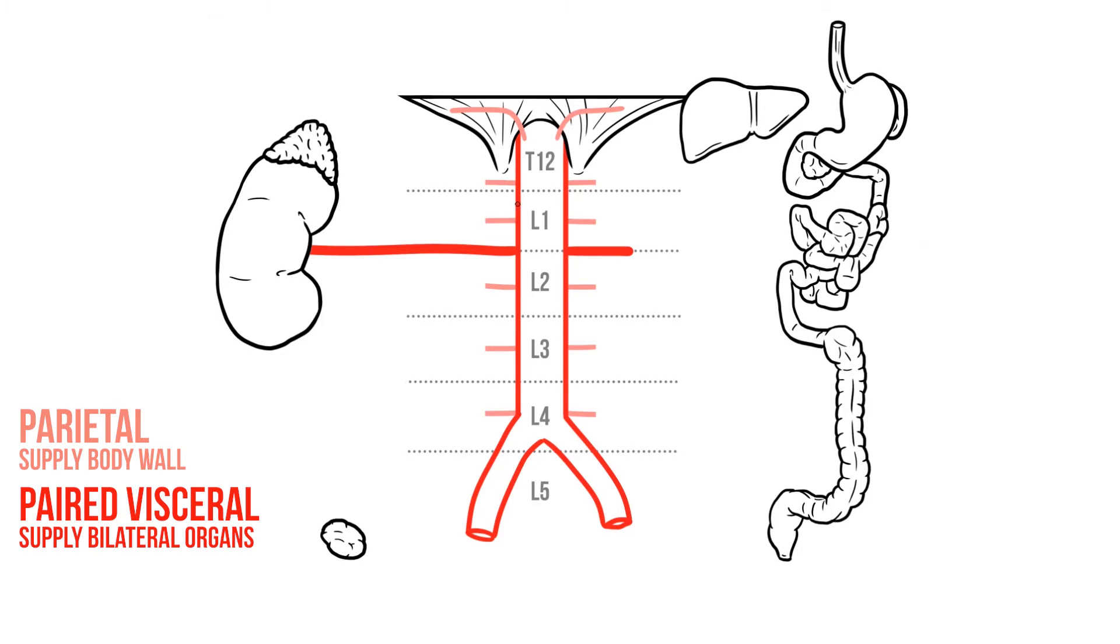Just above this are small branches that head to the gland on top of the kidney, the middle suprarenal arteries. Now if you're wondering why these are called the middle suprarenal arteries, it's because they sit between two other suprarenal branches. The superior suprarenal comes down from the inferior phrenic whilst the inferior suprarenal is a branch of the renal artery.